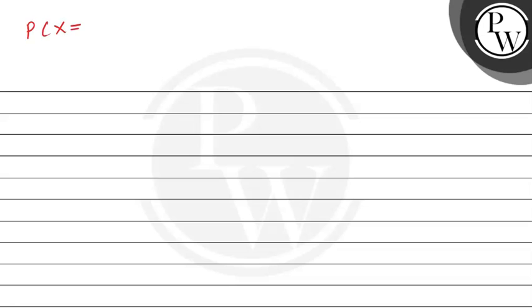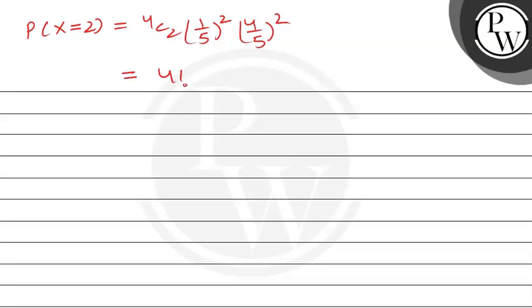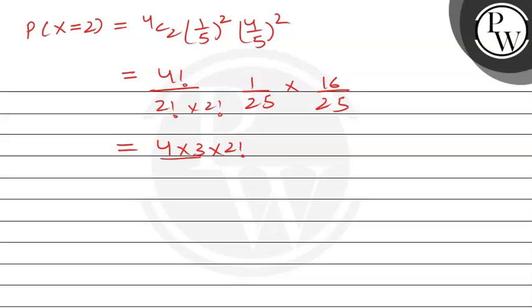Probability when X equals 2: P(X=2) = 4C2 × (1/5)^2 × (4/5)^2 = (4!/2!×2!) × (1/25) × (16/25) = 6 × 16/625 = 96/625.